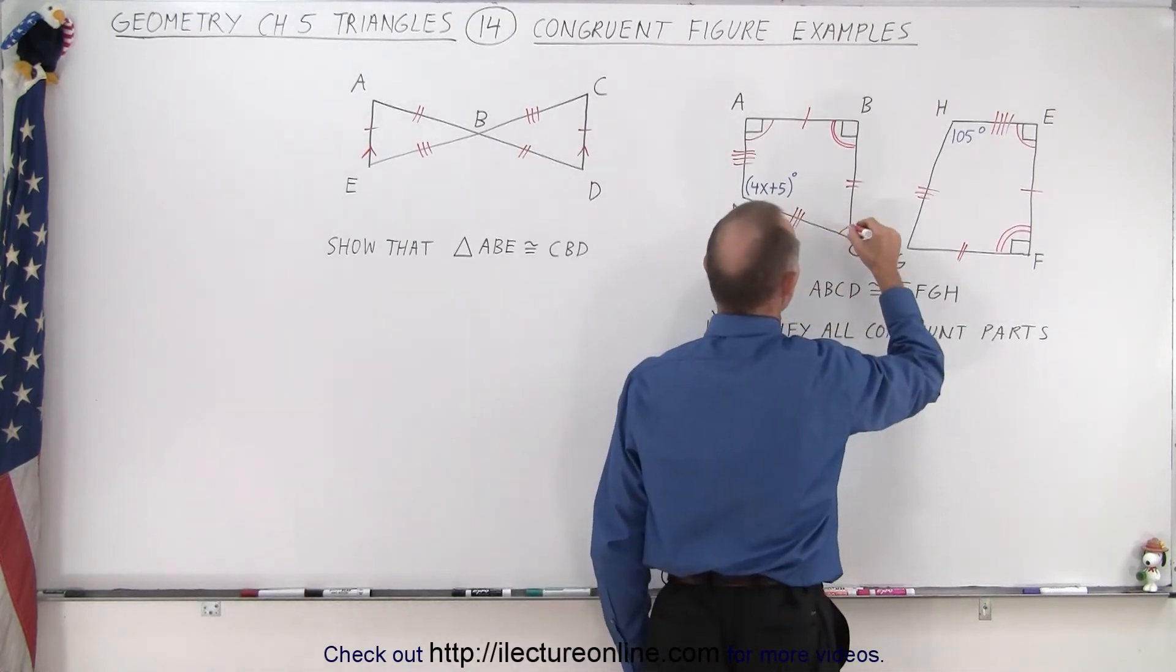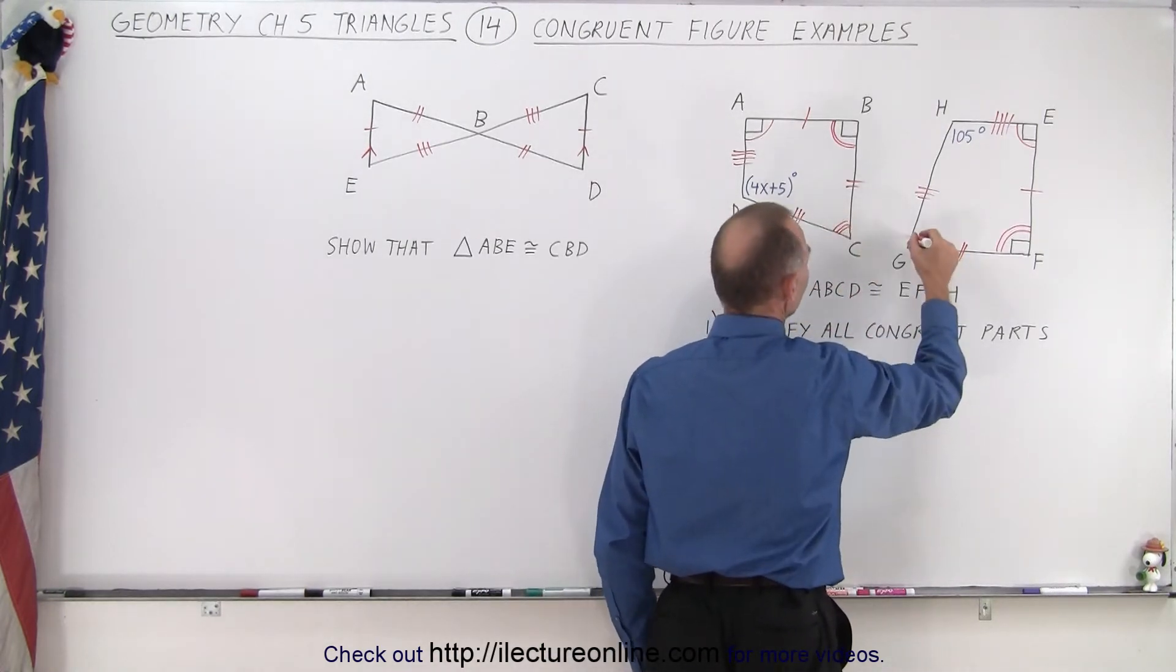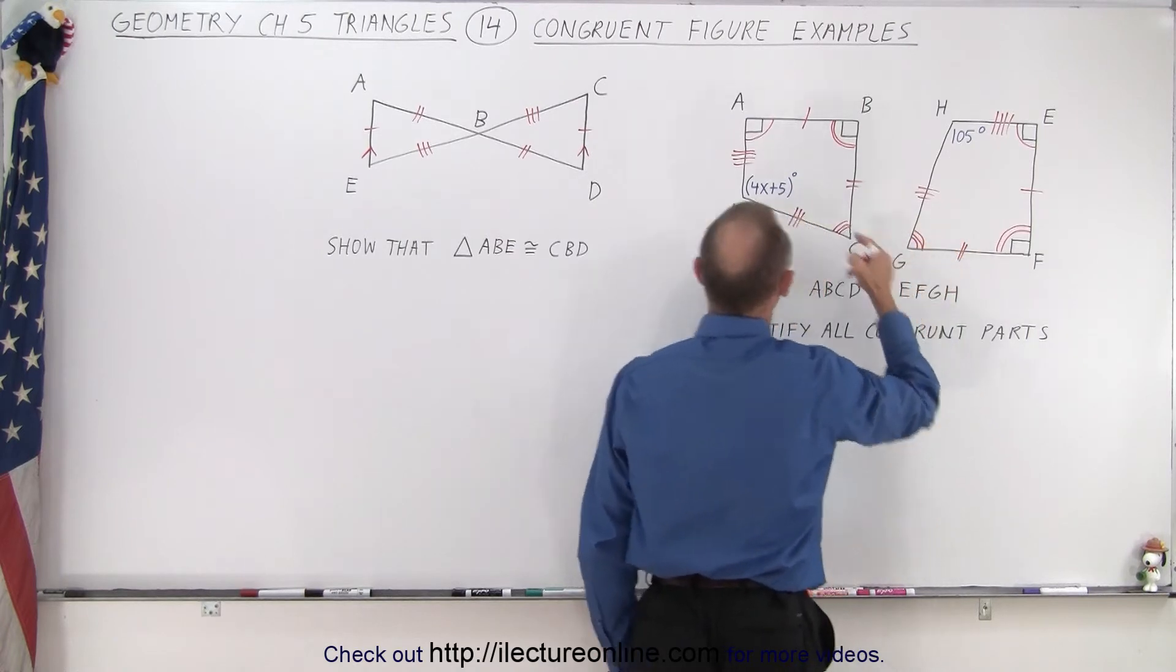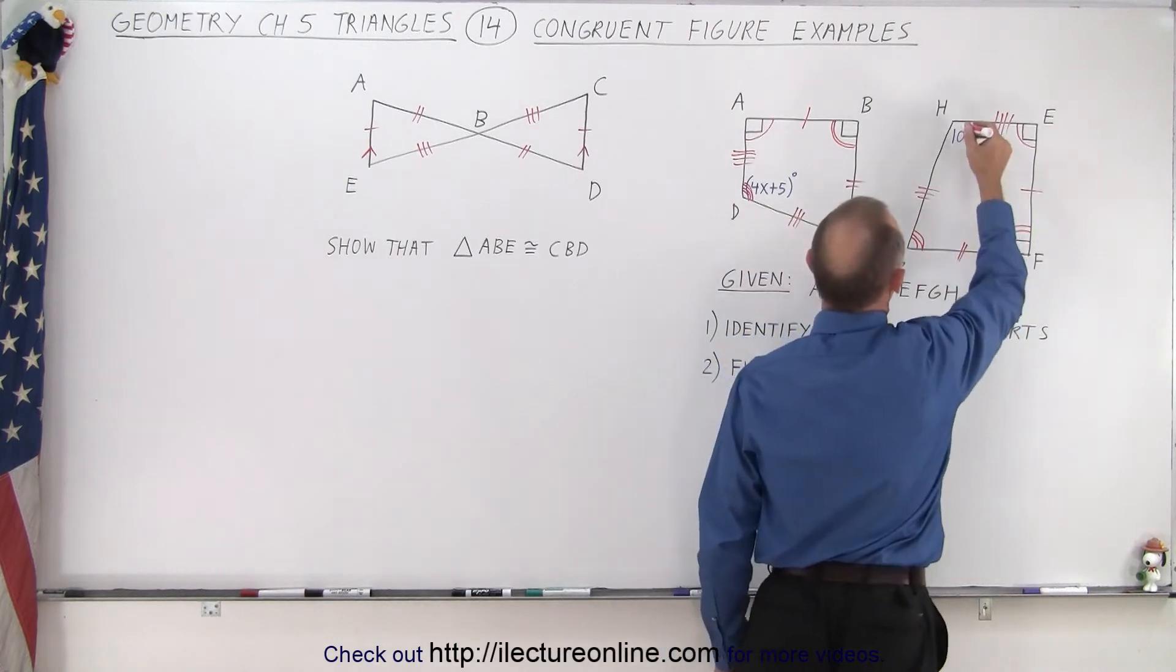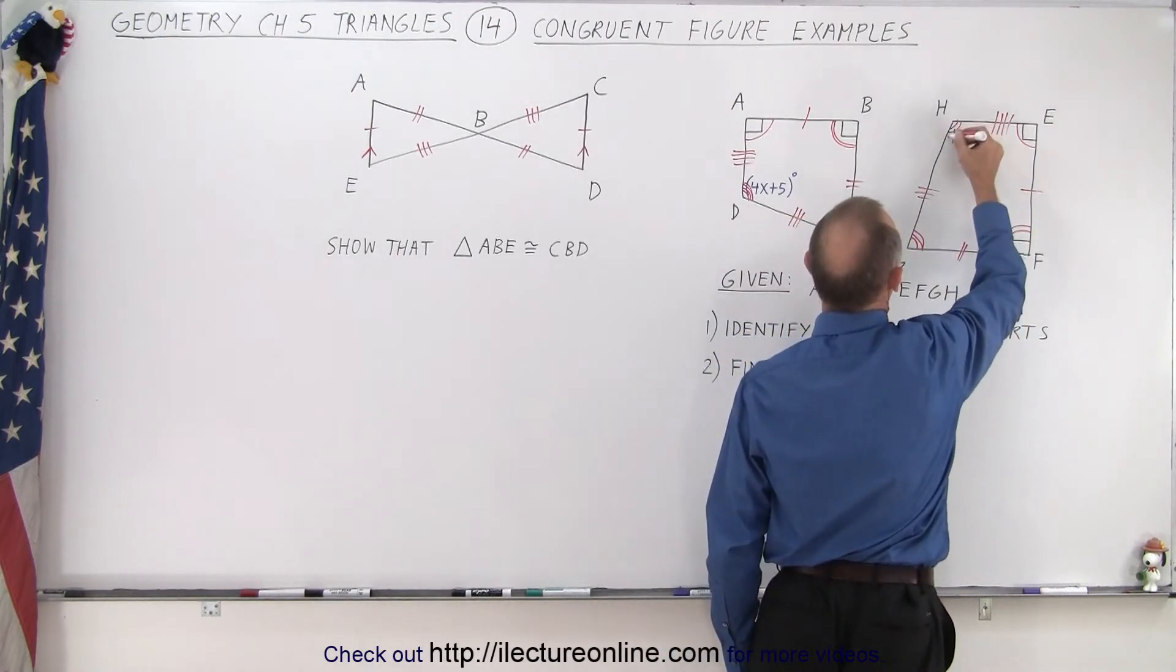Then we come to this angle here. This angle must have the same angular measure as this. And then finally, the fourth angle right here, 1, 2, 3, 4, must have the same as this angle here. 1, 2, 3, 4.